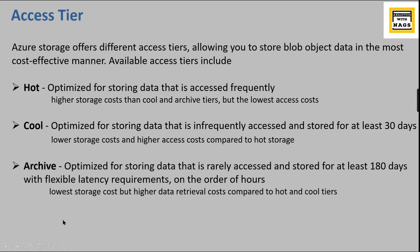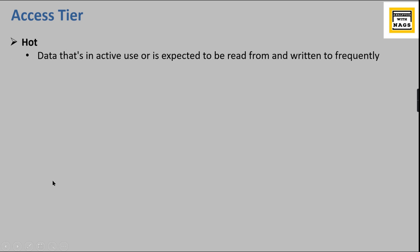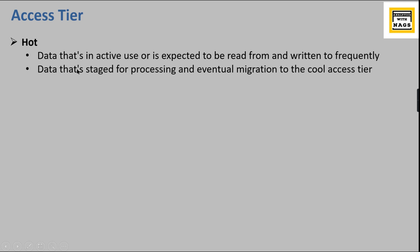When deciding which tier to use, consider how frequently you will access the data. Hot tier is for active data that is read or written frequently. For example, if you have a web page that launches 100 images immediately on screen load, you store those in Hot. A gallery with rarely visited event photos that only stays for 30 days would be less frequently accessed.